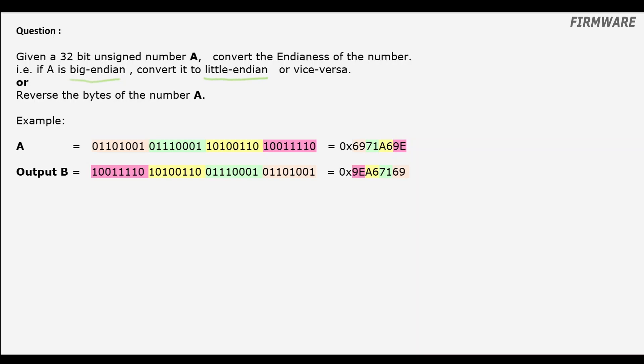Here we are going to convert the endianness of a given multibyte number — that is, we are going to reverse the bytes in the given number. If you are not familiar with the concepts of big-endian and little-endian systems, please have a look at our previous episode, whose link is in the description below. In the previous episode we saw that the ordering of bytes of a stored number in memory is exact opposite between a little-endian system and the big-endian system. Therefore, to convert between them, we just need to reverse the position of bytes.